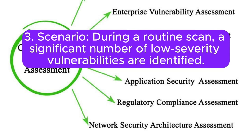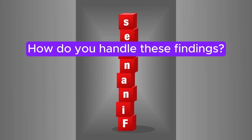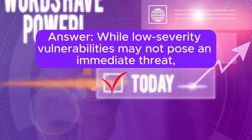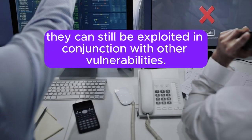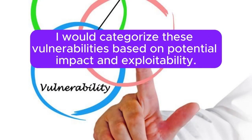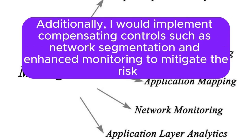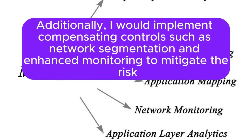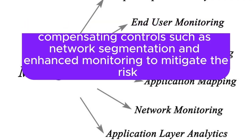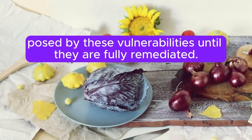Scenario 3: During a routine scan, a significant number of low-severity vulnerabilities are identified. How do you handle these findings? While low-severity vulnerabilities may not pose an immediate threat, they can still be exploited in conjunction with other vulnerabilities. I would categorize these vulnerabilities based on potential impact and exploitability, and work with the IT team to schedule regular updates and patches to address these issues over time. Additionally, I would implement compensating controls such as network segmentation and enhanced monitoring to mitigate the risk posed by these vulnerabilities until they are fully remediated.